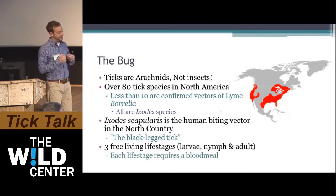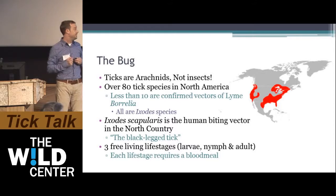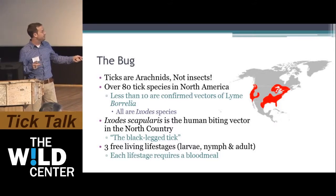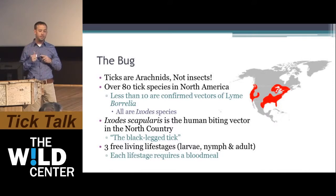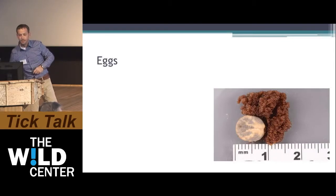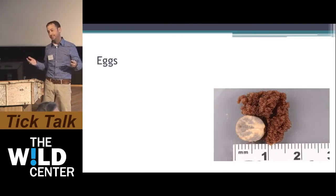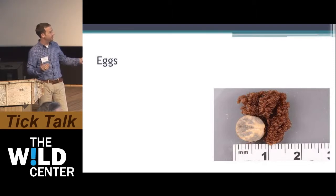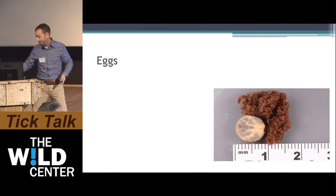Let's talk a little bit about the tick because it's very important in the disease. There are actually three free-living life stages: the larva, the nymph, and the adult. After each life stage, a blood meal is required to go on to the next stage. The egg is not a free-living life stage, but they all start from eggs. This is a female tick laying her eggs.